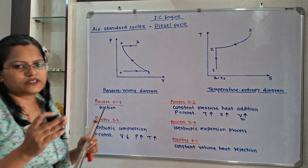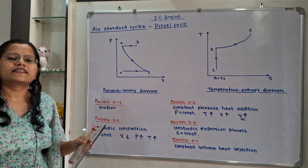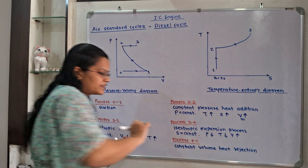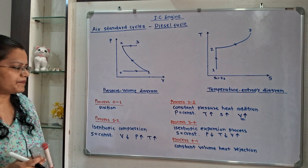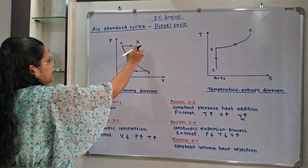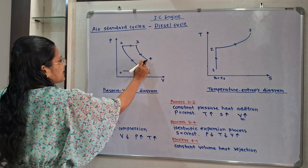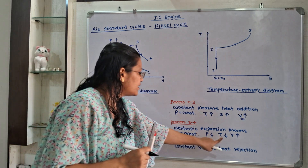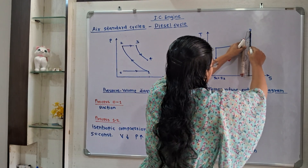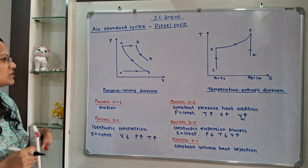Next is the isentropic expansion process, where expansion takes place and S remains constant. When expansion occurs, pressure decreases; as pressure decreases, temperature also decreases and volume increases. On the PV diagram, we show decrease in pressure but increase in volume. For the temperature-entropy diagram, temperature decreases and S remains constant, so S3 equals S4. I will show point 4 here.